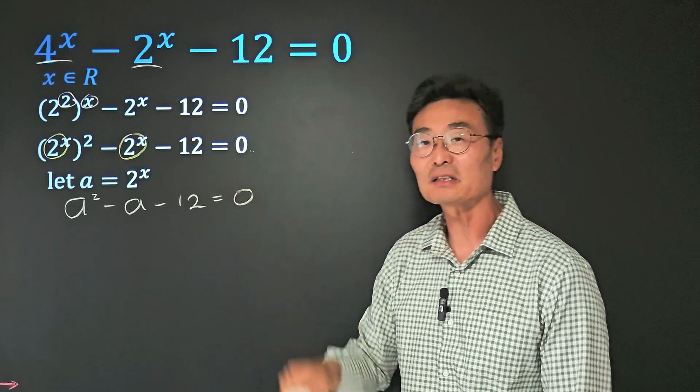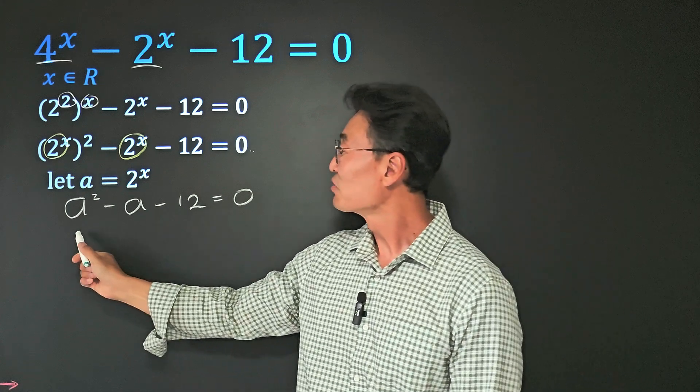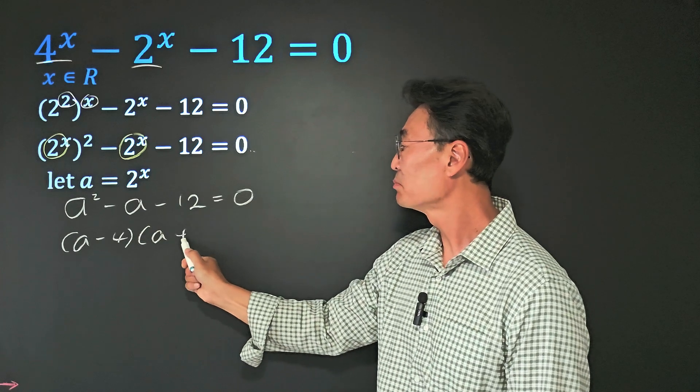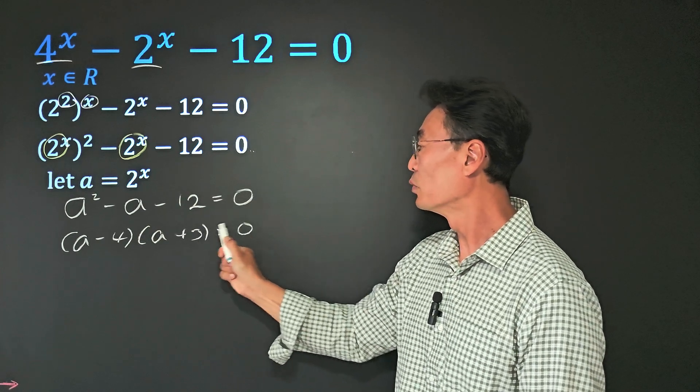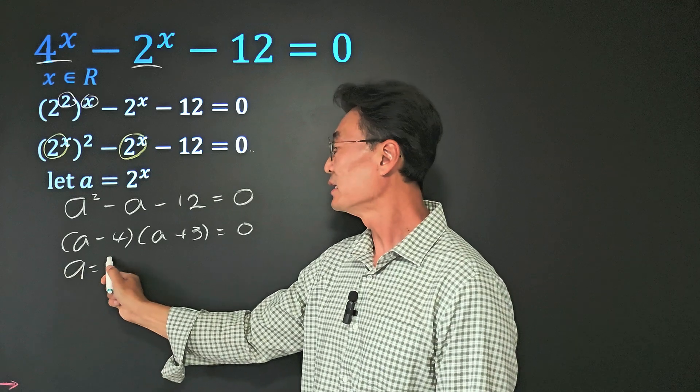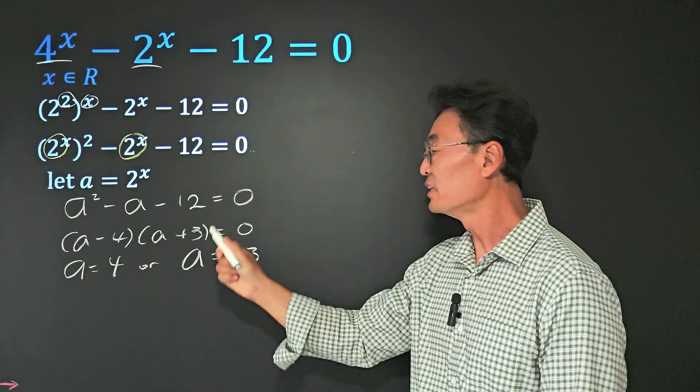If you're able to factor this directly from here, even better. Let's go ahead and factor this. We get (a - 4)(a + 3) = 0, and a = 4 or a = -3.